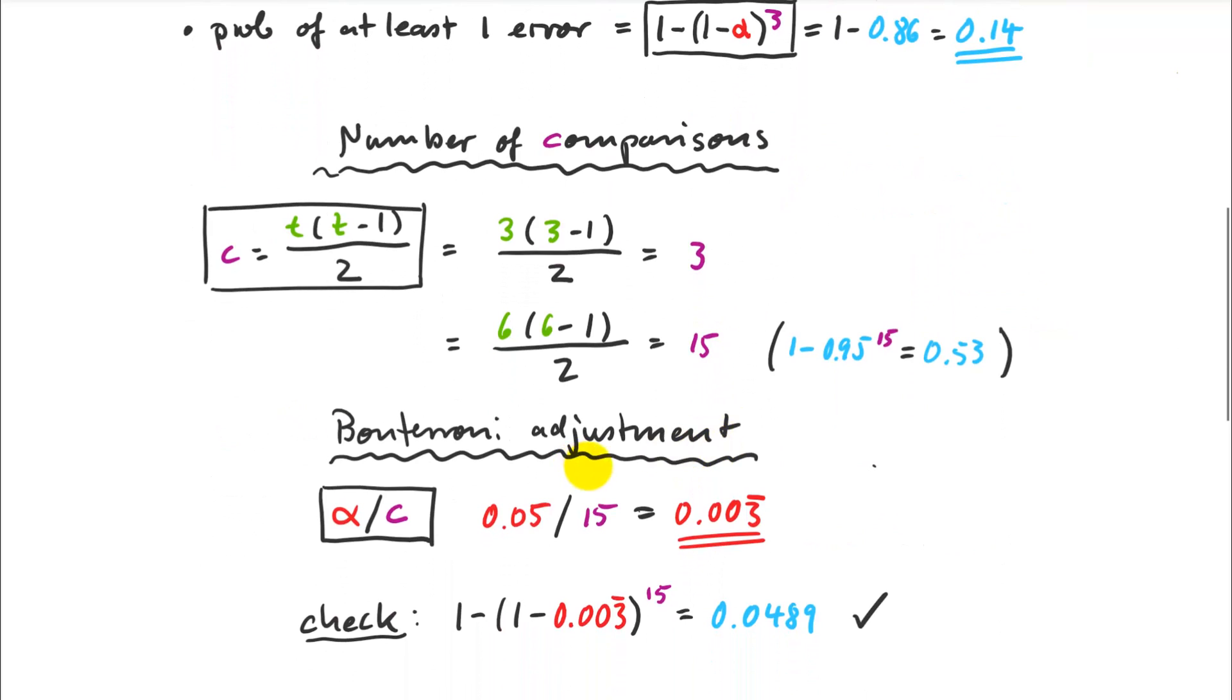But there's an easy fix. Bonferroni is a statistician who came up with this. What you do is you just divide the alpha level that you want by the number of comparisons. So if you do 0.05 divided by 15, you get a 0.00333 new alpha value, and that you should use instead of the 0.05.